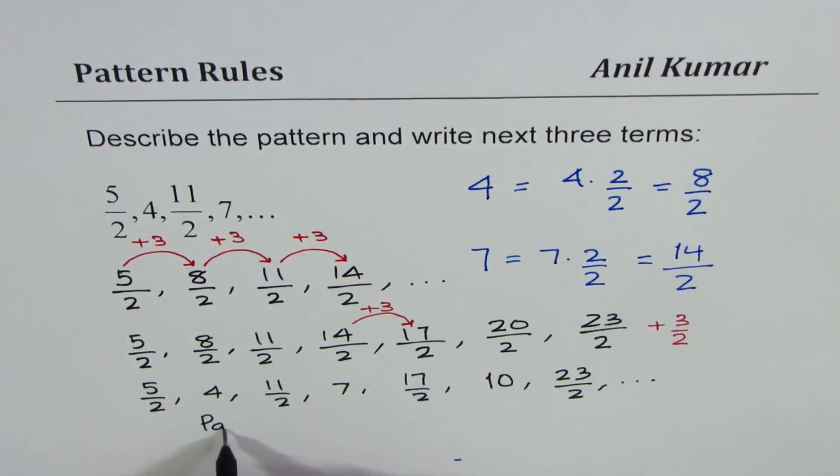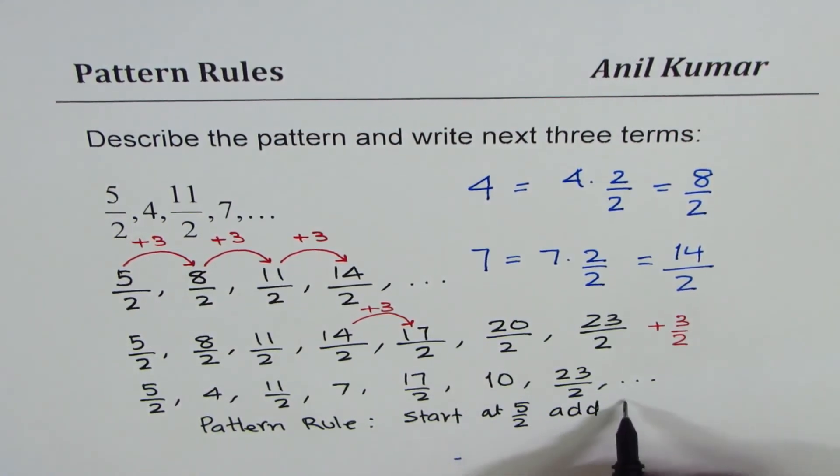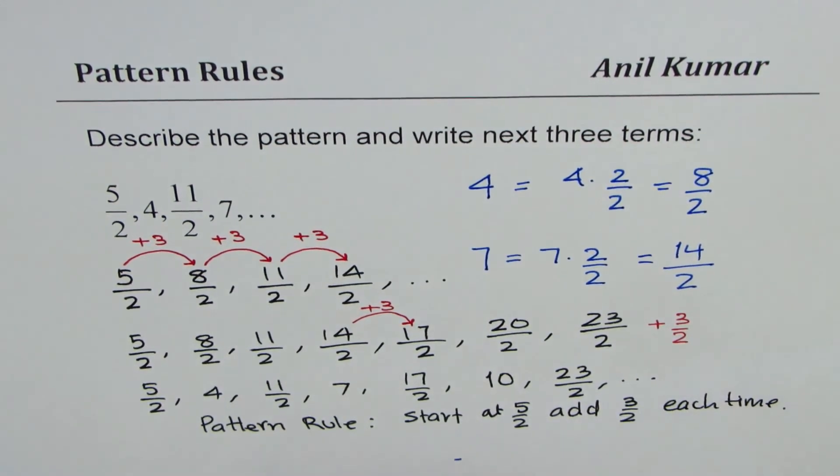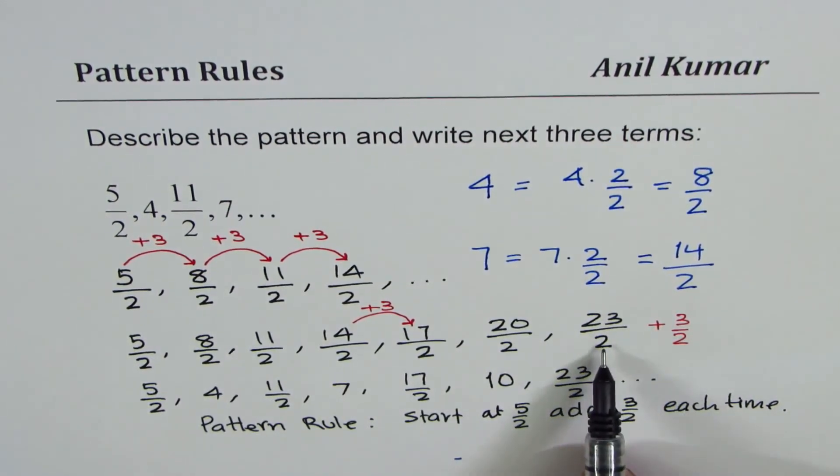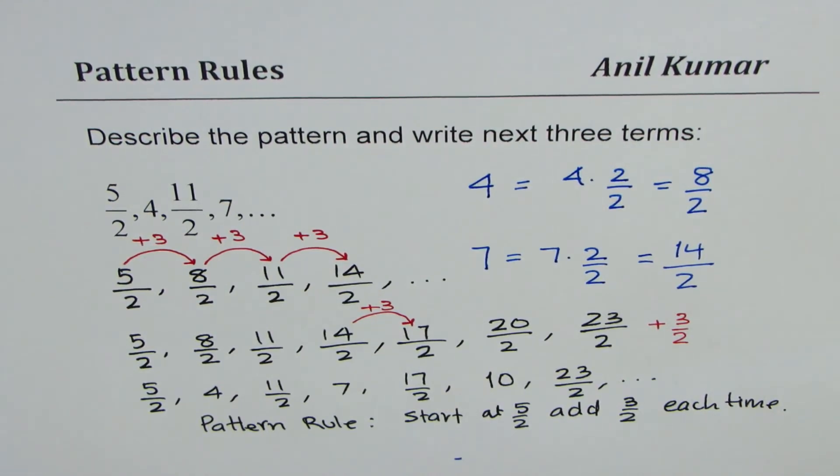And the pattern rule is, what is the pattern rule? The pattern rule is, start at 5 over 2 and add 3 over 2 each time. So when you add 3 over 2, denominator remains at 2, the numerator is added by 3. So that is how you can extend this pattern and write the rule. I hope that helps. Thanks and all the best.